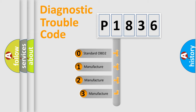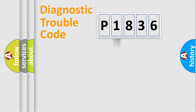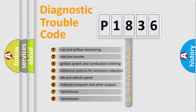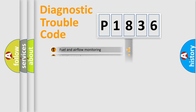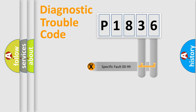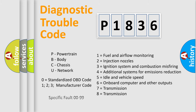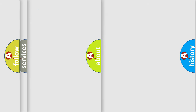If the second character is expressed as zero, it is a standardized error. In the case of numbers 1, 2, or 3, it is a more manufacturer-specific expression of a car-specific error. The third character specifies a subset of errors. This distribution is valid only for the standardized DTC code. Only the last two characters define the specific fault of the group, and such a division is valid only if the second character is expressed by the number zero.